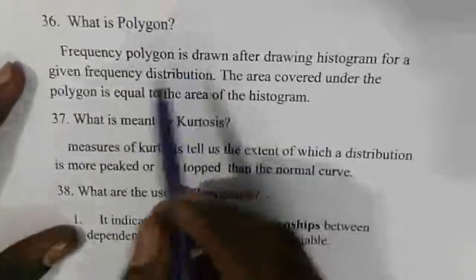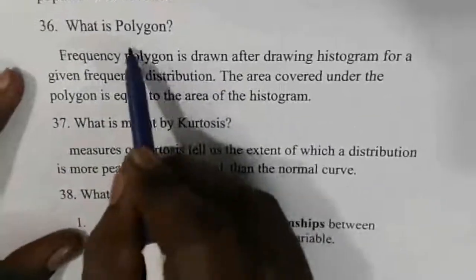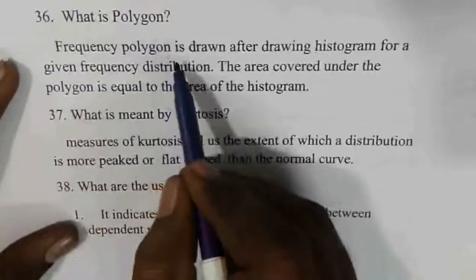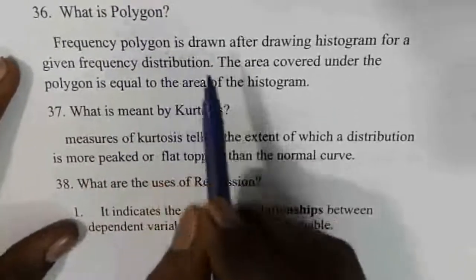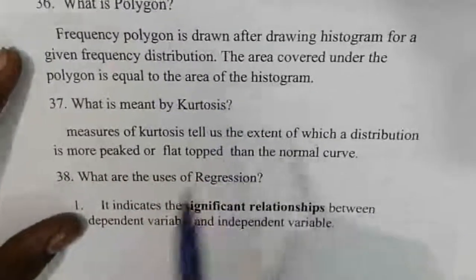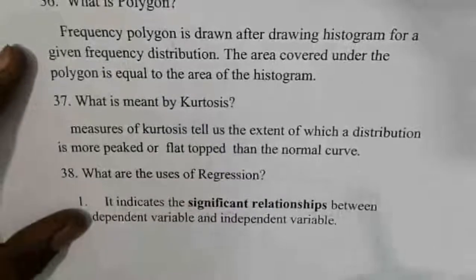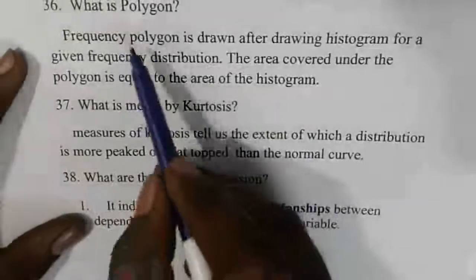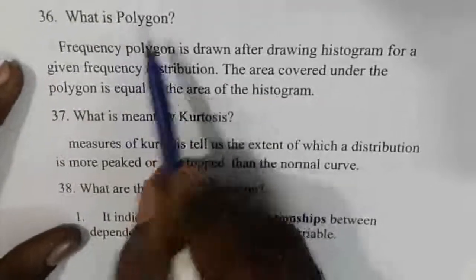Frequency polygon: in a graph, the histogram is connected to form a frequency polygon. If you draw the histogram and connect the midpoints, that is called a polygon.